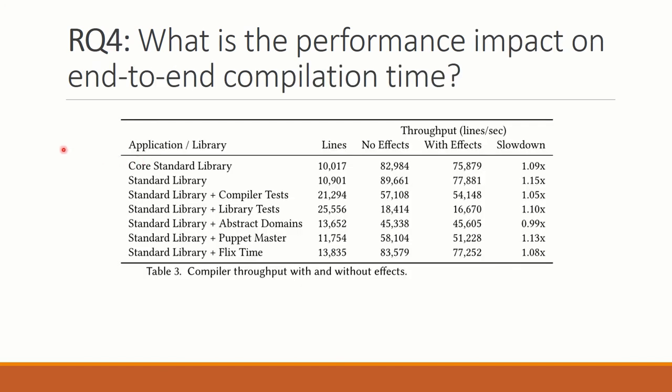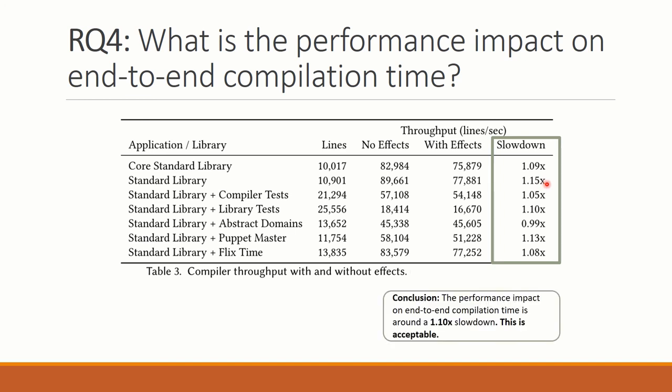Turning to the fourth question, we consider what is the performance impact on end-to-end compilation time? And so really the reason we have this question is because even though there is perhaps up to a 2x slowdown on the time it takes to do type inference, type and effect inference, that is not the only thing a compiler has to do. So we want to look at the whole compilation pipeline to see how much does this actually slow down the compiler. And here the results suggest that there is a slowdown in this range here. So for some programs, there is not much of a slowdown. For others, there is maybe up to 1.15x. So in summary, we conclude for this experiment that this average slowdown is probably around 1.1x, which we find to be acceptable.